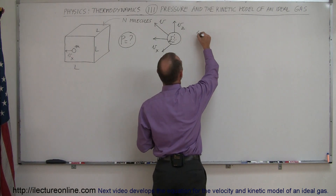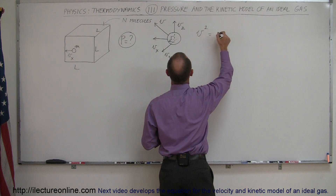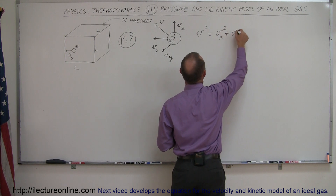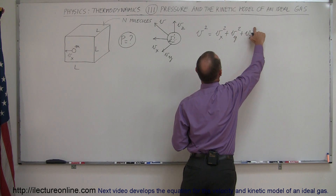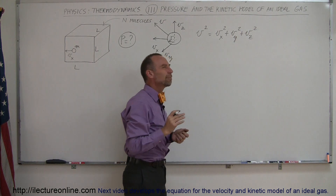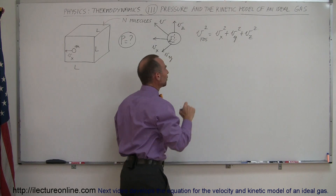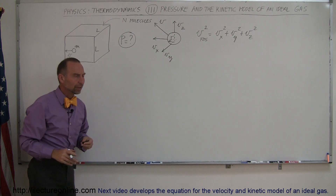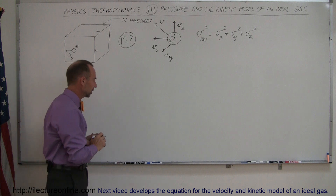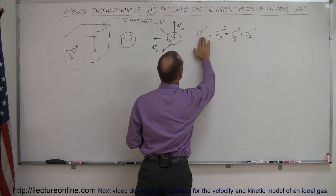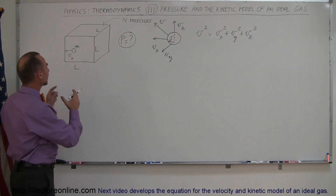We can use the Pythagorean theorem: v² equals v_x² plus v_y² plus v_z². The average velocity — or more precisely the RMS velocity — comes into play because eventually we'll take the square root of the sum of the squared velocity components, which is the RMS velocity. For now, let's leave that aside and return to it later.